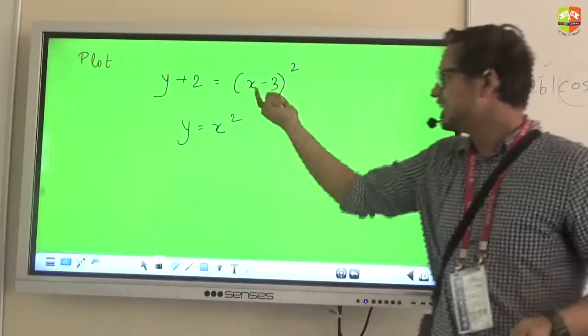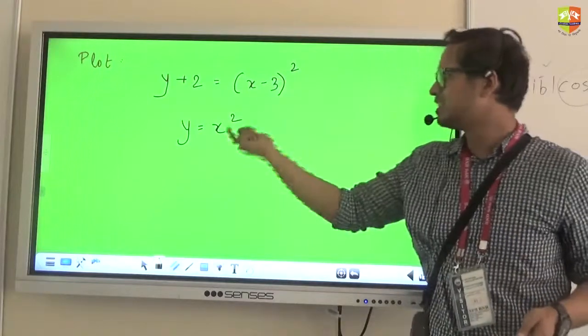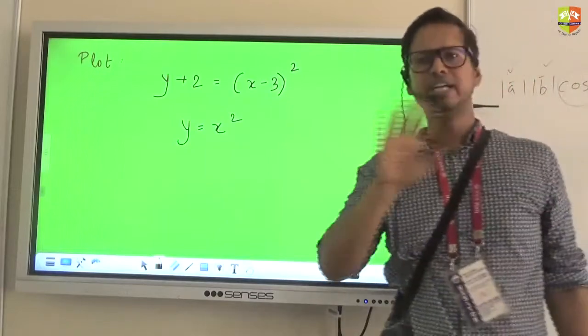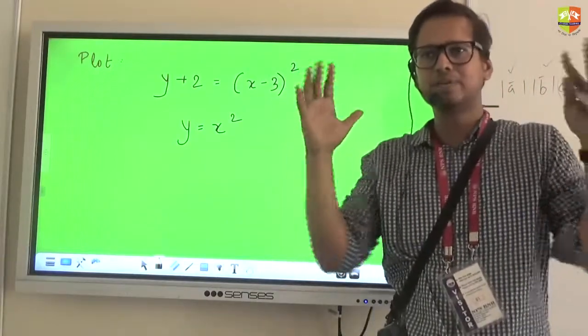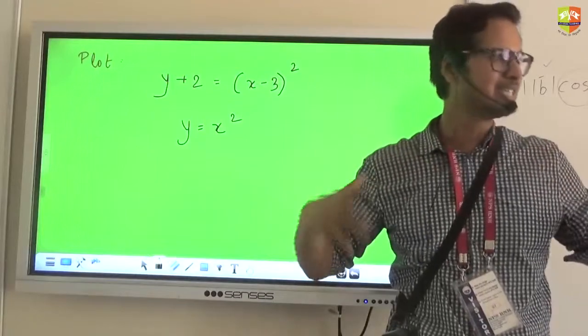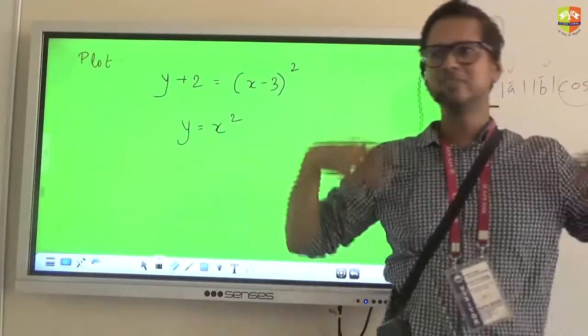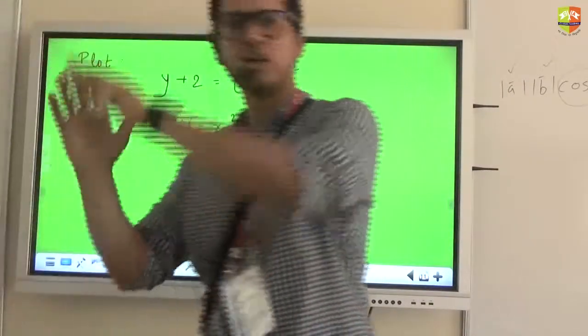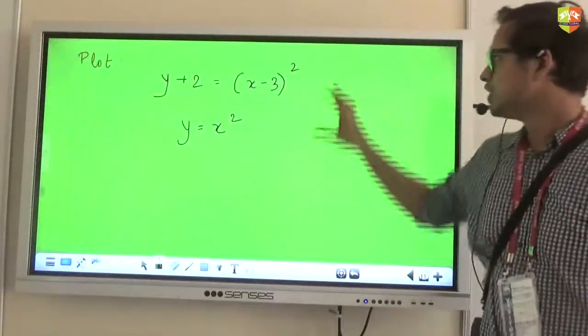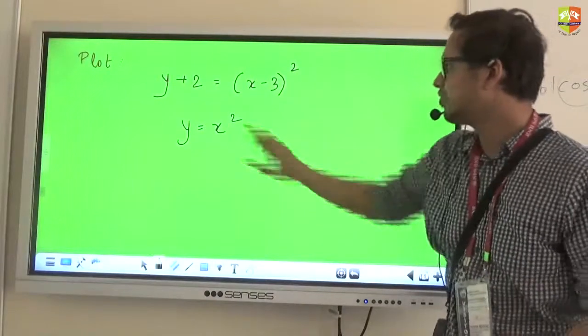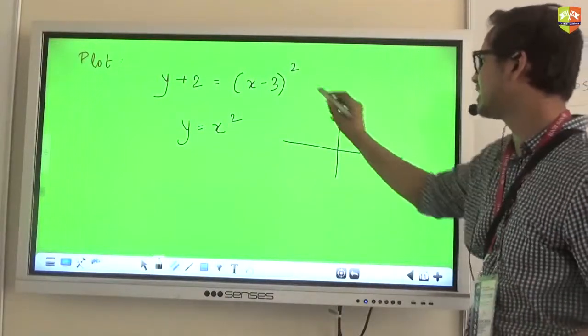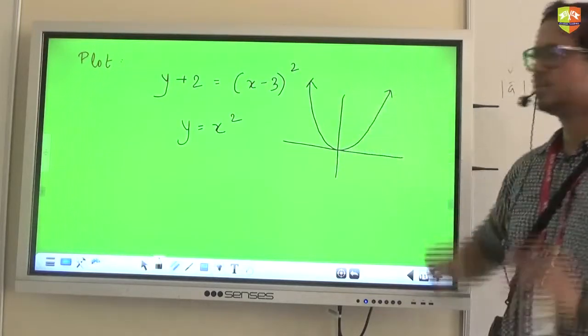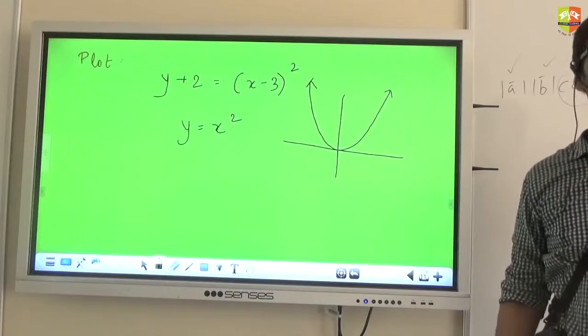These changes that you see, that is your x has now become x minus 3, y has now become y plus 2. This is something which we can take care of later on, but the skeleton, what we call in Hindi as dhacha, the human body skeleton. The way the other parts are packed makes a person different from the other, but all of us have the same skeleton. So all these type of graphs come from a skeleton y equals x square, which you know is like this.